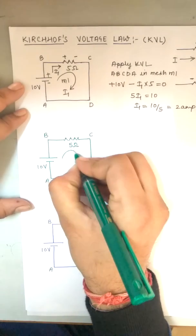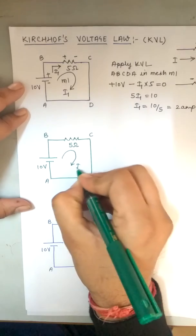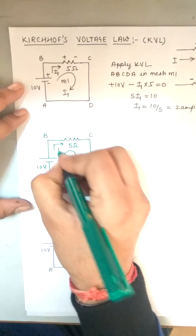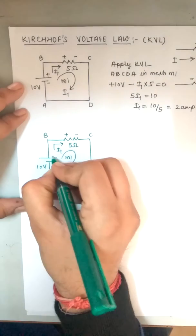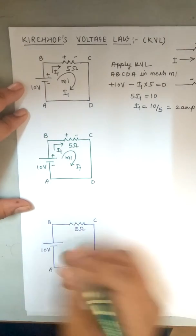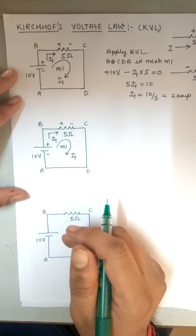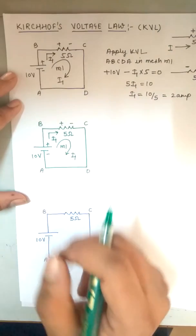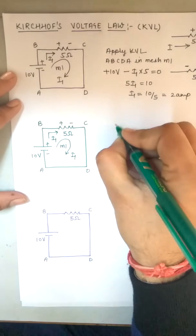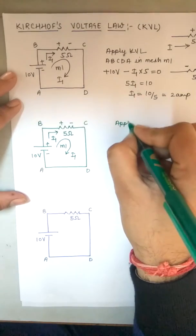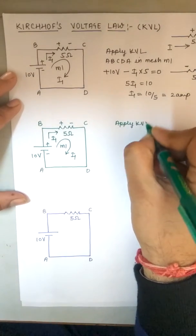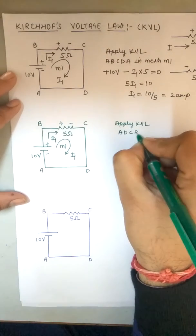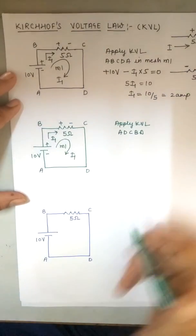For the same problem with the same convention — I1, M1, current entering from this side — this terminal is positive, this is negative, and on the battery this is positive, this is negative. Now I write the equation by applying KVL anticlockwise, traversing the path a, d, c, b, a.